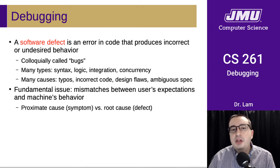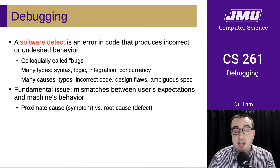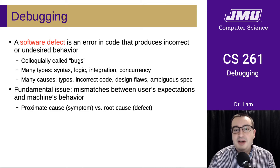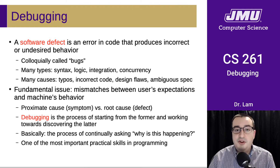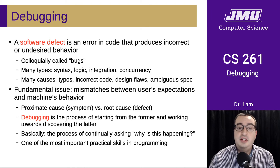There is a difference between the symptom and the defect — the proximate cause, the thing you're noticing is wrong, and the root cause, the thing that's actually at the beginning of the causal chain. Your program crashes, but that's not the bug — the bug is the reason your program crashed. Debugging is really the process of starting from the former and working towards discovering the latter, because you can't fix a symptom; you have to find and fix the defect.